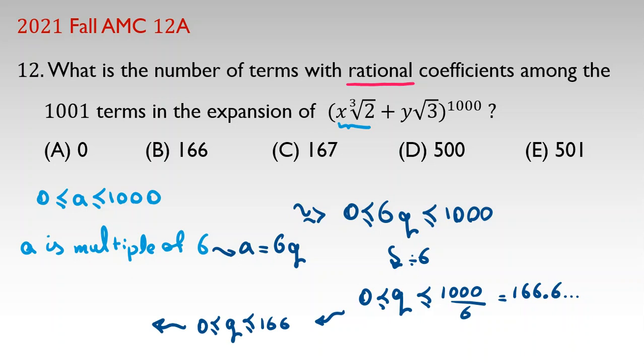So, the number of good q's equal to the answer, equal to 167 and it will be C.